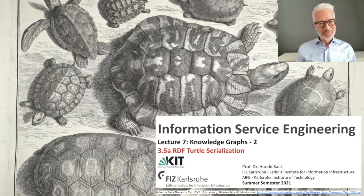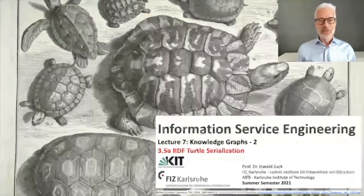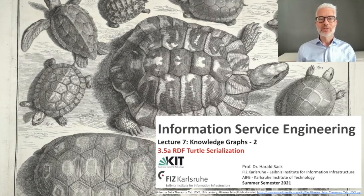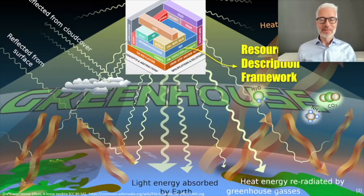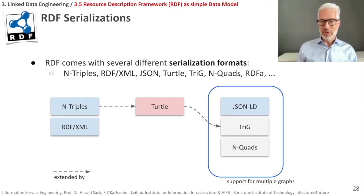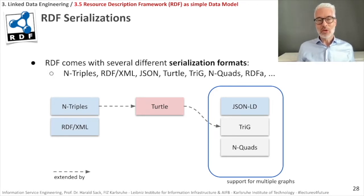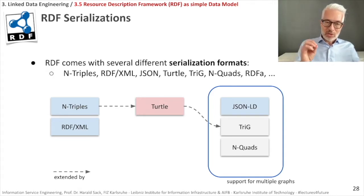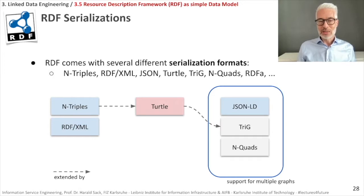This is Information Service Engineering, lecture number seven: Knowledge Graphs, Part Two. In this section we are going to talk about RDF Turtle serialization, with all examples coming from climate change and the greenhouse effect. Let's remember what we did in the last lecture: RDF graphs can be serialized as N-Triples, where everything is a complete URI. These representations soon become rather crowded and difficult to read, so there is a much more abbreviated version.